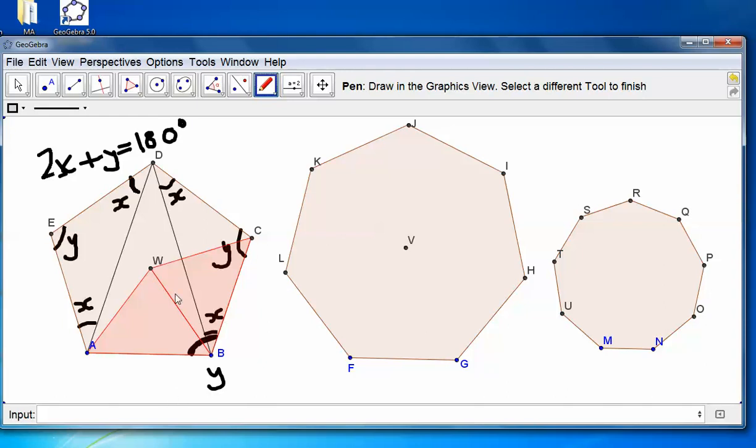that this line bisects Y, which makes this angle here Y over 2, and this angle here Y over 2. Now, because both of these angles add up to Y, we know that this one has to be 2X.